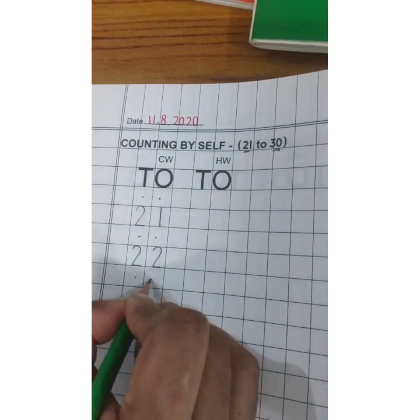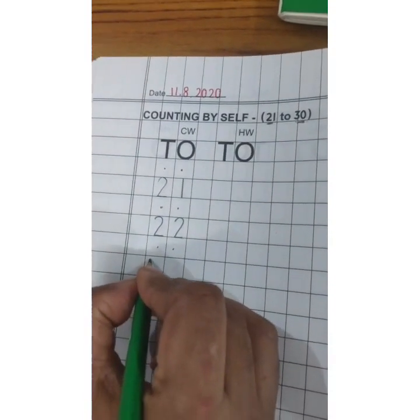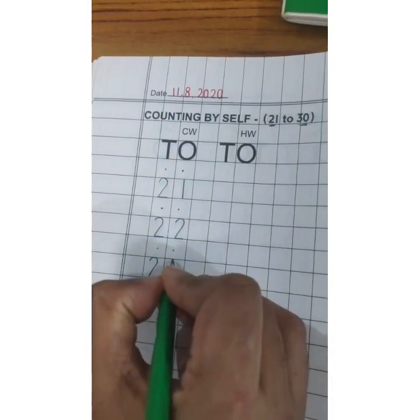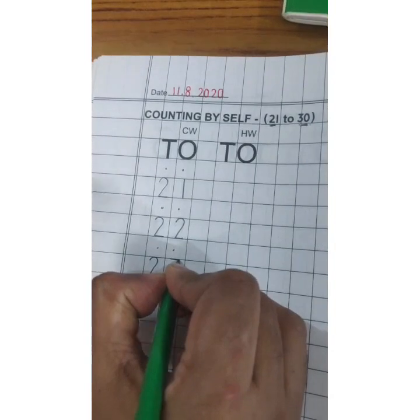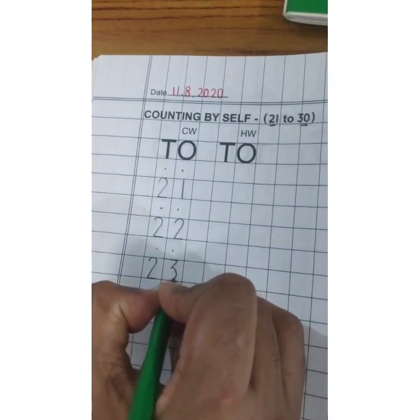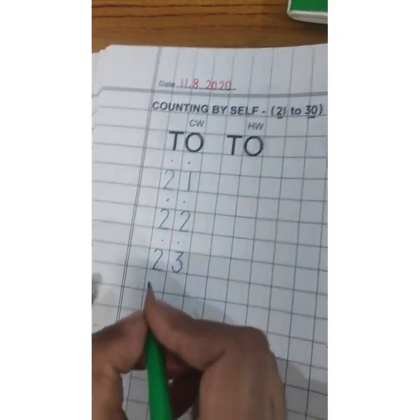Okay, again dot. Yes, leave the box. 2 tens, 3 ones. Dekho, ones ke niche 3 aayega na? 3 ones. 23. 2 tens 3 ones, 23.